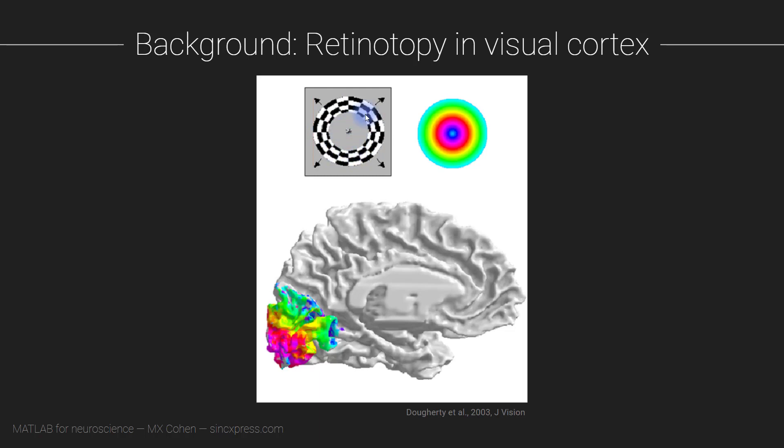Now in research experiments this is often measured by having a ring that looks something like this that's flickering at different distances from the origin. And these distances are called eccentricities. And in fact this is what we are going to be examining in the data set in this module.